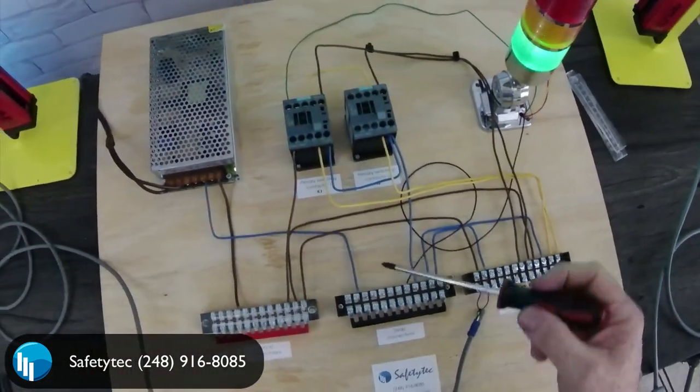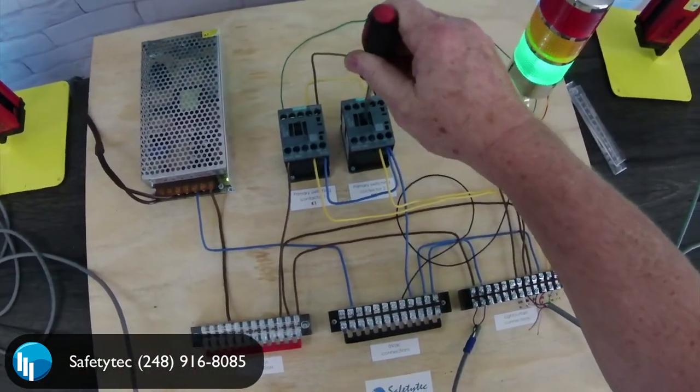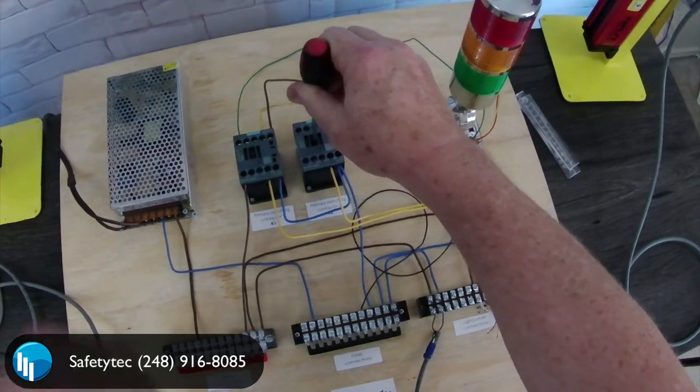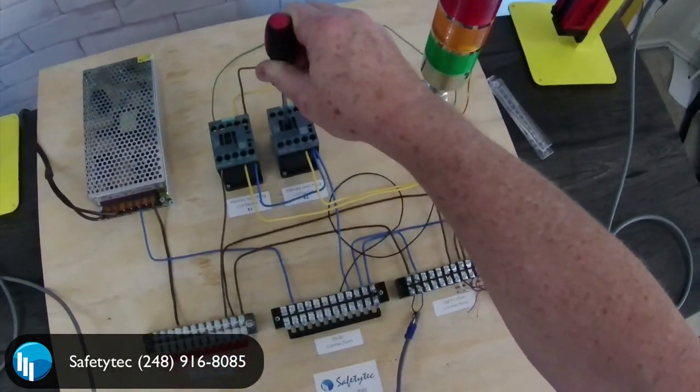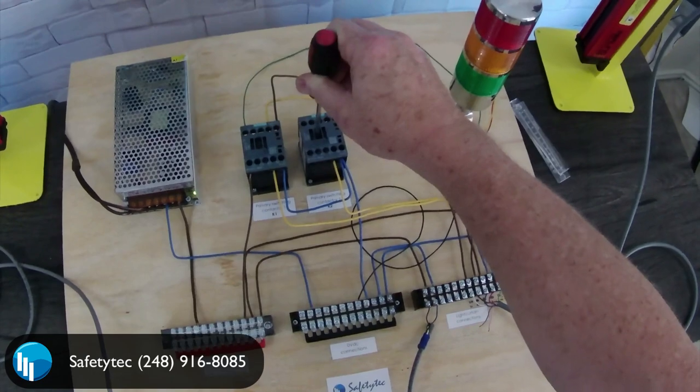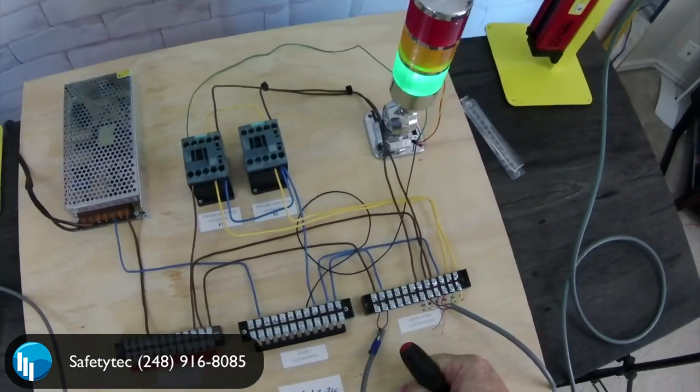And to show you the EDM circuit is working, if I jam this contactor in place, you can see it doesn't work. The light curtain has detected that this contactor has failed and won't start the machine until it's fixed.